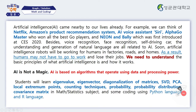Soon, artificial intelligence will be working for humans in factories, in law, and in homes. As a result, humans may not have to go to work and may lose their jobs. We need to understand the basic principles of what artificial intelligence is and how it works. We should understand that artificial intelligence is not magic.